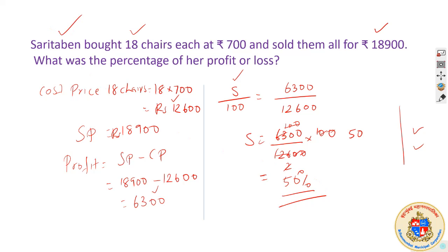50% profit for Saritha Ben. What is important to us is not who is selling, but how the profit percent is calculated. Our method of solving the problem is important — finding out: if the cost price is 100, what will the profit be? If it is out of 100, we are getting the answer for percentage, which is what the textbook is asking.